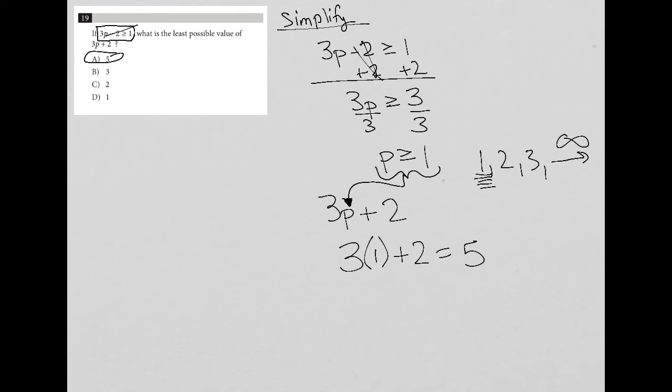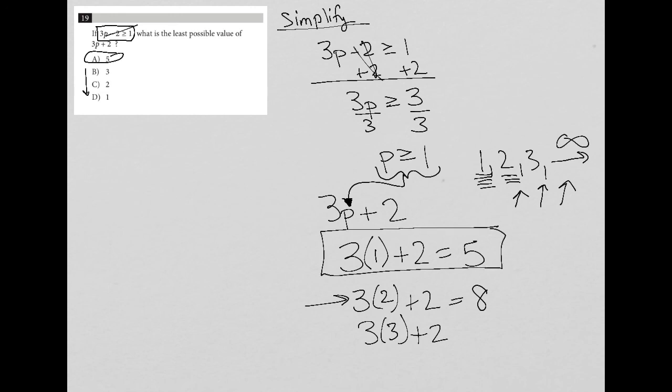And if you don't trust that, you can say, well, what would happen if I chose two instead, right? Because p could equal two. When I put two in here, three times two plus two, I get eight. Notice that all of the other options on here are smaller than five. But as I go up in p values, my solution here gets larger, right? Three times three plus two is even larger than three times two plus two. So I know with certainty that five is the best answer.